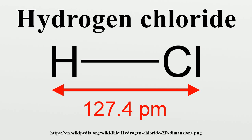Since the chlorine atom is much more electronegative than the hydrogen atom, the covalent bond between the two atoms is quite polar. Consequently, the molecule has a large dipole moment with a negative partial charge delta minus at the chlorine atom and a positive partial charge delta plus at the hydrogen atom. In part because of its high polarity, hydrogen chloride is very soluble in water.